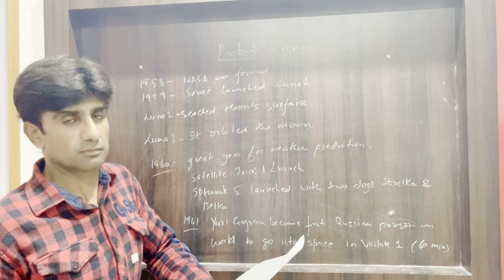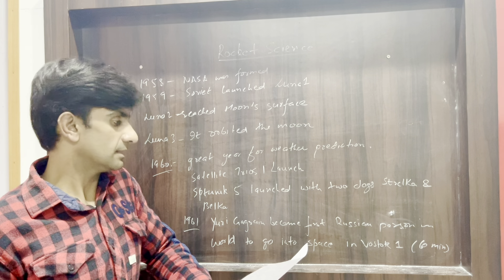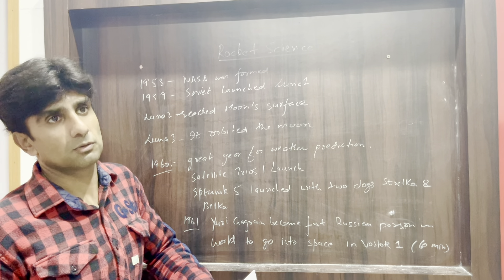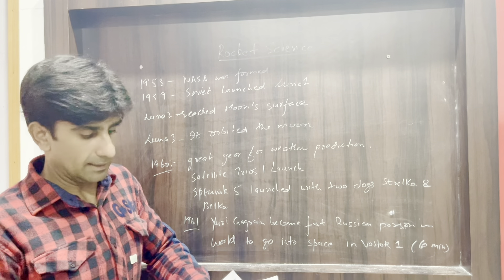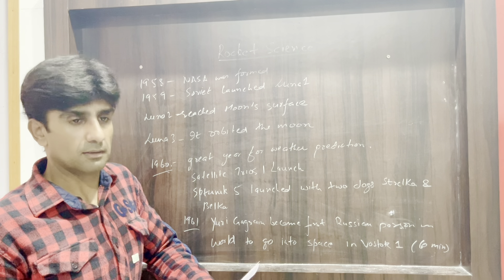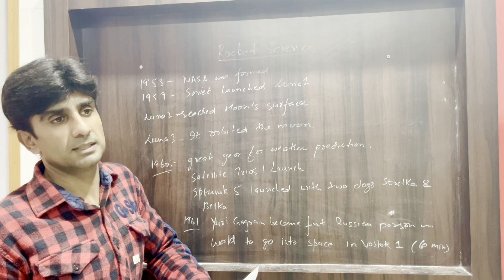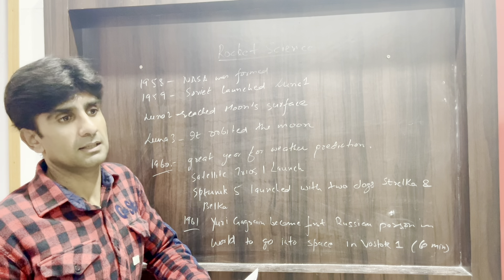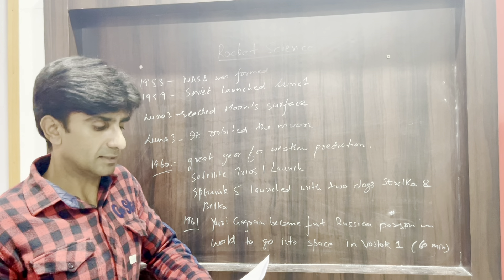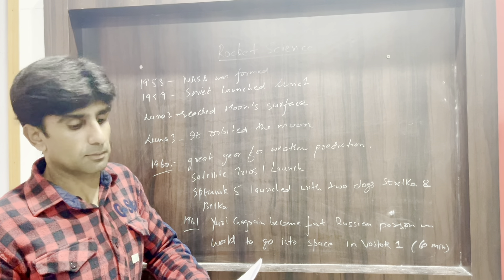On April 12, 1961, Soviet cosmonaut Yuri Gagarin became the first person in the world to go into outer space, in the spacecraft called Vostok 1. His journey took 60 minutes in total. Vostok 1 was a derivative of the R7 ICBM, which could be used as a spacecraft, and this rocket burned kerosene and liquid oxygen as propellant.